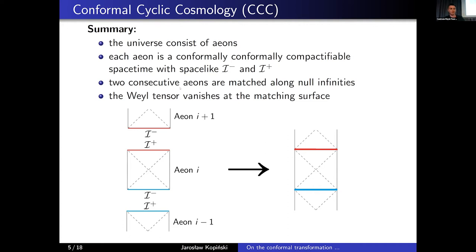The conformal cyclic cosmology is a model by Penrose, which can be summarized in a few points. First of all, it assumes that our universe consists of a sequence of building blocks called eons. Each eon is a conformally compactifiable spacetime with spacelike past and future null infinity I minus and I plus. The matching of two consecutive eons is performed by gluing together the future null infinity of the previous eon with the past null infinity of the next eon, as visible in the picture. One additional condition is that the Weyl tensor vanishes on those matching hypersurfaces.